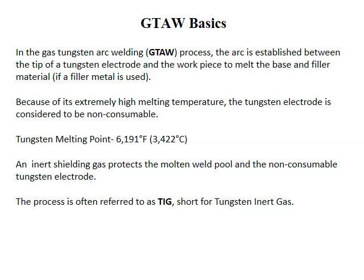In the GTAW process, the arc is established between the tip of a tungsten electrode and the workpiece to melt the base and filler metal. Because of its extremely high melting temperature, the tungsten electrode is considered non-consumable. Tungsten's melting point is 6,191°F (3,422°C). An inert shielding gas protects the molten weld pool and the non-consumable tungsten electrode from the atmosphere. The process is also often referred to as TIG — tungsten inert gas.